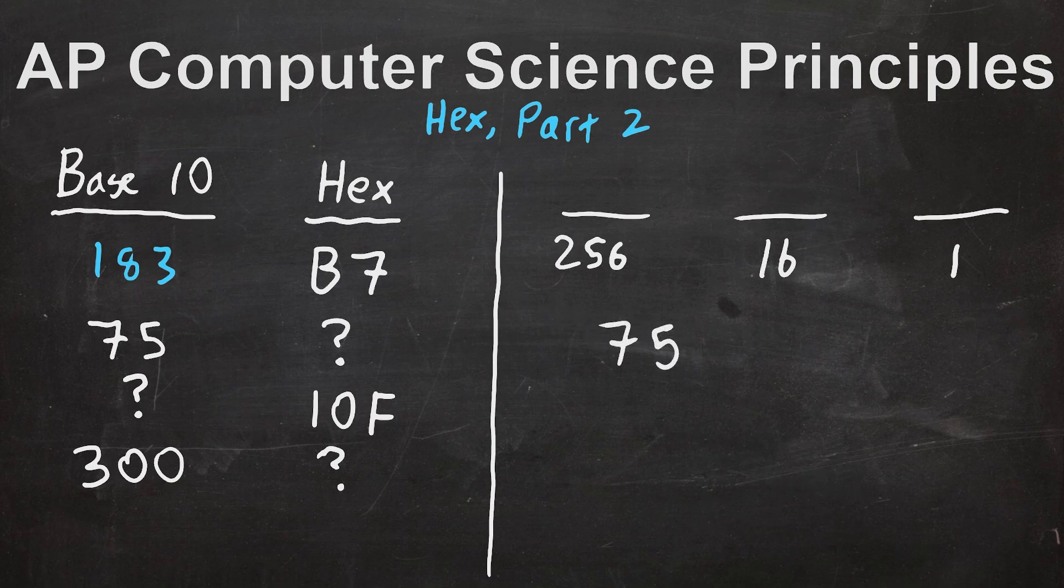Our second problem is to take the number 75 in base 10 and convert it over to hex. Now I think we can all agree that 75 is smaller than 256, so we're not going to pay any attention to that place value. The second question is how many times does 16 go into 75? That'll be the number up here, how many 16s are in that 75.